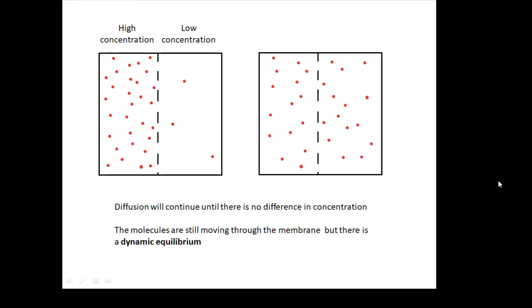So high concentration to low concentration. Now, diffusion will continue until there is no difference in concentration. However, the molecules, the particles, will still be moving through the membrane, but you'll have the same number going one way as the other way. You'll end up with what we call a dynamic equilibrium. The molecules are still moving through the membrane, but there is a dynamic equilibrium—it's balanced.